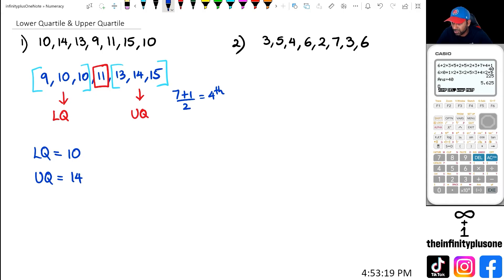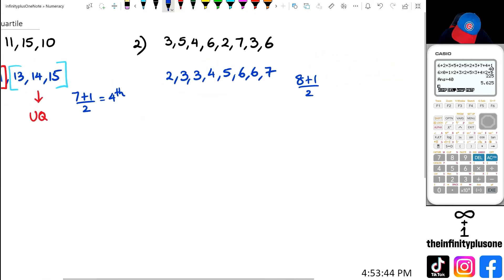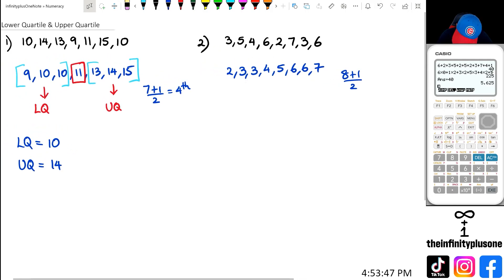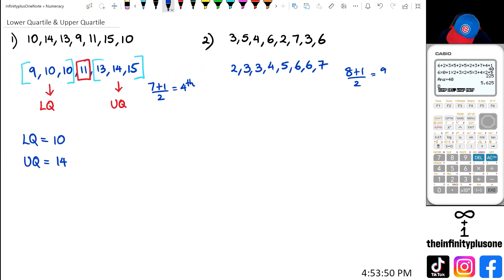Cool, let's have a look at question number two. We're going to order the numbers in ascending order, so we've got 2, 3, 3, 4, 5, 6, 6, and 7. Now we need to figure out what the median is. To do that, we've got eight numbers plus one divided by two, which is going to be nine over two, so 4.5. So we're looking between the fourth and fifth number.